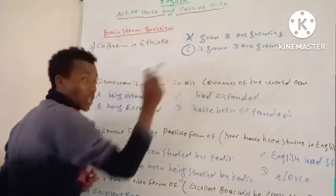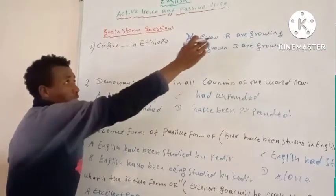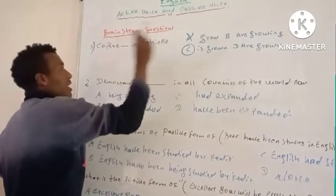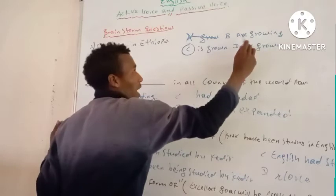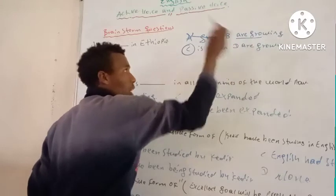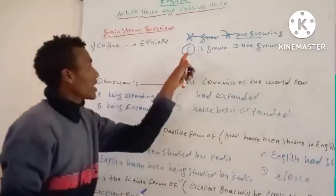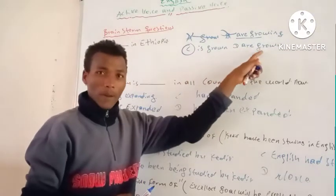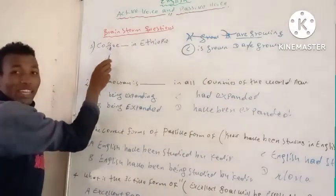Also, 'coffee' is uncountable, so it cannot take a plural verb — it requires a singular verb. 'Are growing' is the active form because of the auxiliary verb, so it is unnecessary. D) 'are grown' is also in the form of active voice — are plus verb — so if you don't want active voice, it is not the correct answer. For an uncountable noun, 'is grown' is correct.